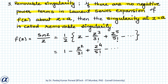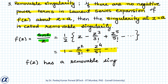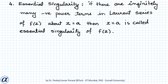The Laurent series expansion of sine z upon z does not have any negative power terms. So even though there appears to be a singularity at z equals zero, this is called a removable singularity, and it can be removed by redefining our function f(z) at z equals zero.